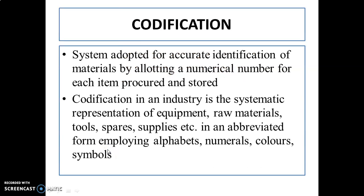First of all, what is codification? A system adopted for accurate identification of materials by allotting a numerical number for each item for code and slot. Codification in an industry is a systematic representation of equipment, raw materials, tools, spares and supplies, in an abbreviated form employing alphabets, numerals, colors or symbols.